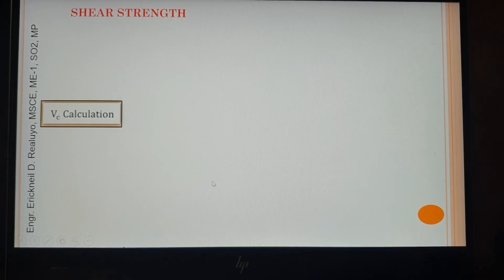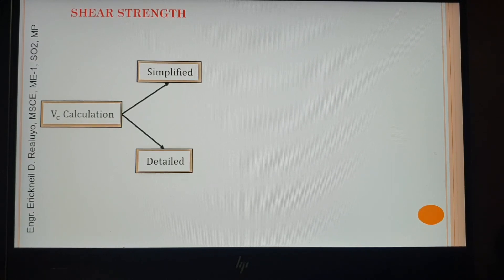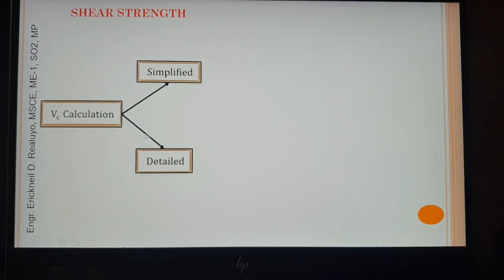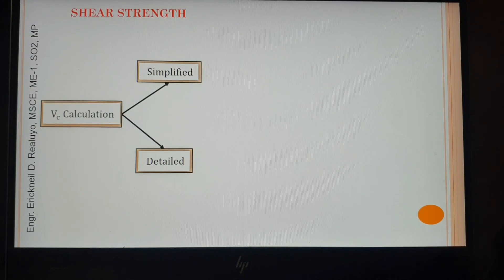First, as an examiner you should decide what are you going to use in the calculation of Vc. Are you going to use the detailed calculation or the simplified calculation? Because we know that there are two calculations for Vc. Then after deciding between these two, by the way, in real life we are always using this detailed calculation, but in board exam we use these two calculations. Well, when it is not specified, we use the simplified calculation.